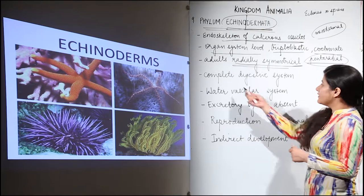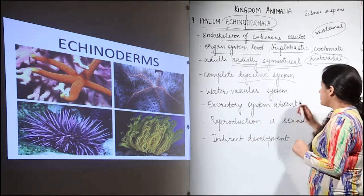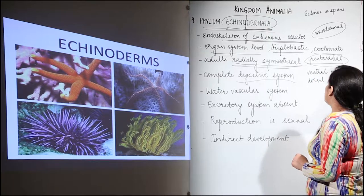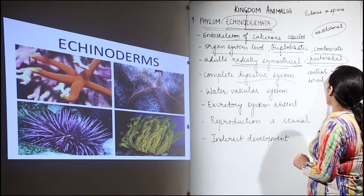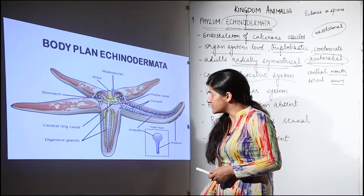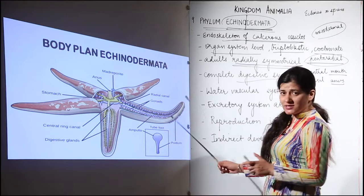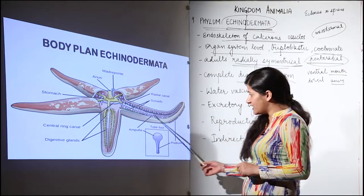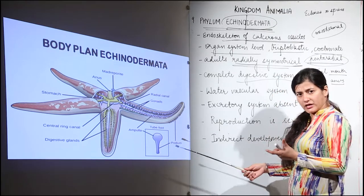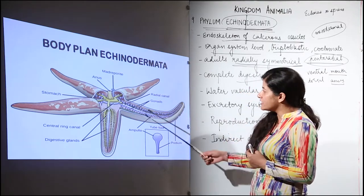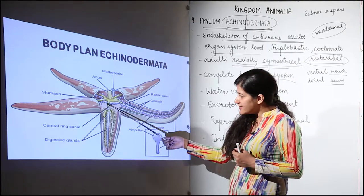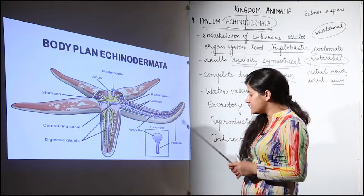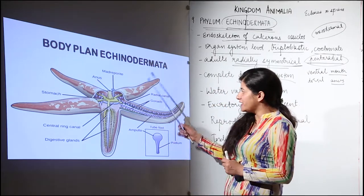Moving further, echinoderms have a complete digestive system. They have a ventral mouth and a dorsal anus. Looking at the basic body plan of the starfish, you can see five arms. There is a peculiar arrangement of tube feet, which are an important part of the water vascular system responsible for respiration and circulation. There are digestive glands, a central ring canal, a stomach, a dorsal anus, and a madreporite through which water enters the body.